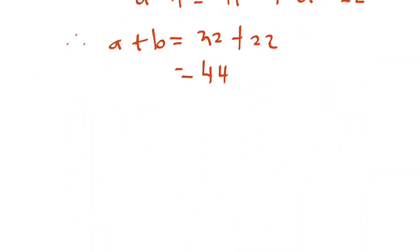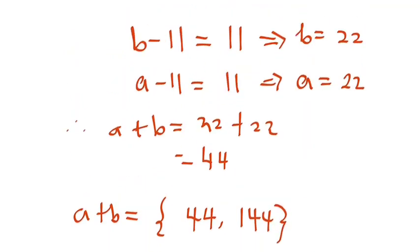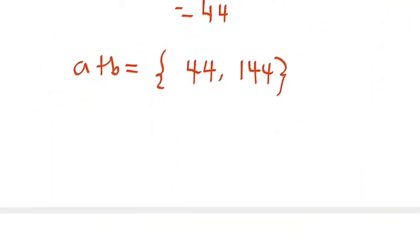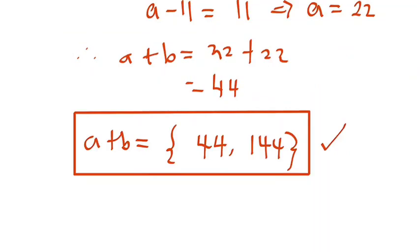So the value of a plus b is either 44 or 144. If you are enjoying the class, kindly share with your friends so they can learn from it. Hit the bell icon so that you will be notified anytime we upload new content. Thank you so much for watching. Bye-bye.